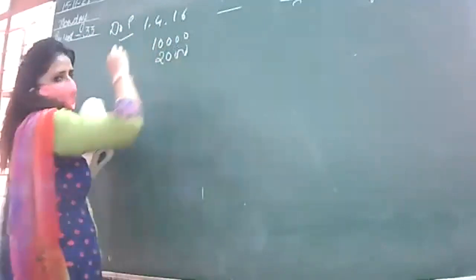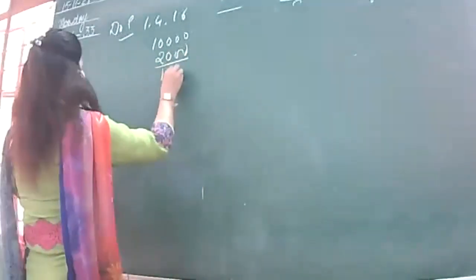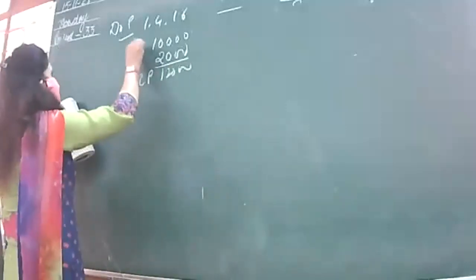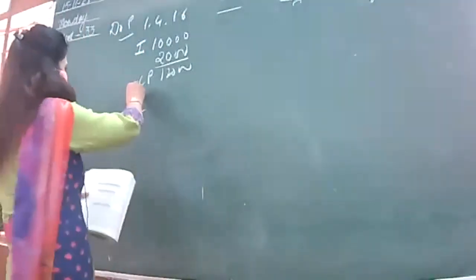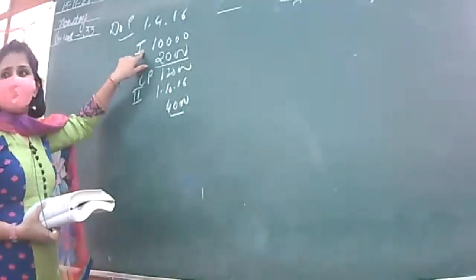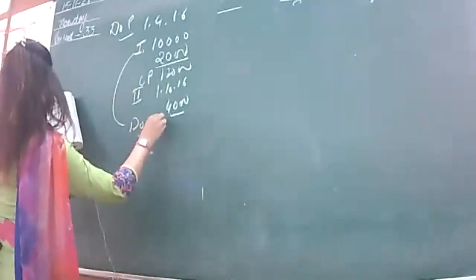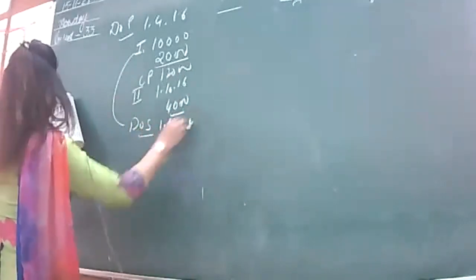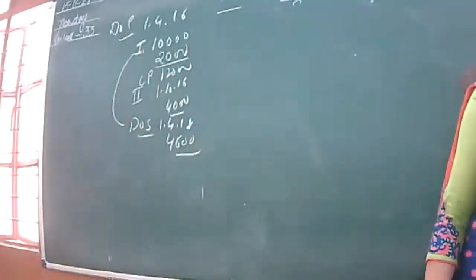There are erection and fitting charges of 2,000, making the total cost price 12,000. Mark this as Machine Number 1. After this, she also bought a second machine. Machine Number 2 was purchased on 1st September 2016 for 4,000. The first machine bought on 1st April 2016 was sold on 1st April 2018 for 4,600. The method used is diminishing balance method.